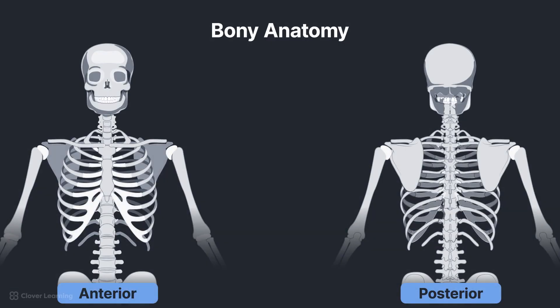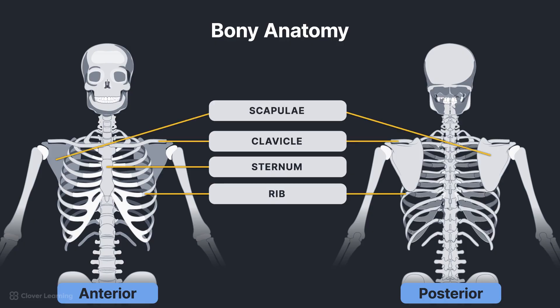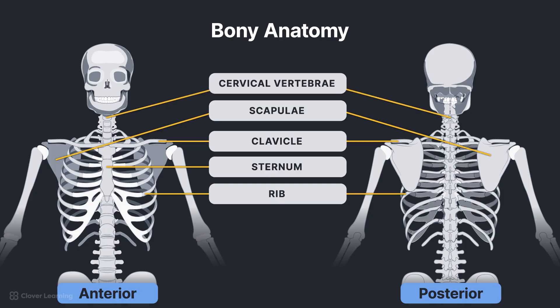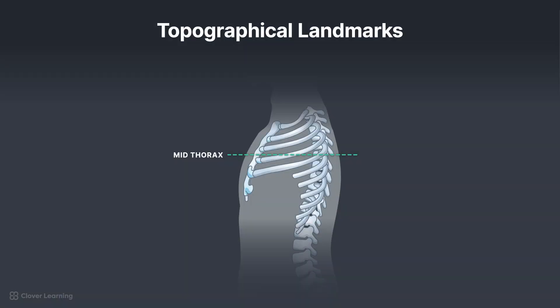Bony anatomy visible on a chest radiograph can include the bony thorax, which is the part of the skeletal system that provides a protective framework for the thoracic viscera. The bony thorax is made up of the ribs and sternum, which will be discussed in another lesson. Other bony anatomy visible include the clavicles, scapulae, inferior vertebrae of the cervical spine, all 12 thoracic vertebrae, and sometimes the superior vertebrae of the lumbar spine. Topographical landmarks used for positioning patients for a chest x-ray include the vertebral prominence, the jugular notch, and the inferior angles of the scapulae.